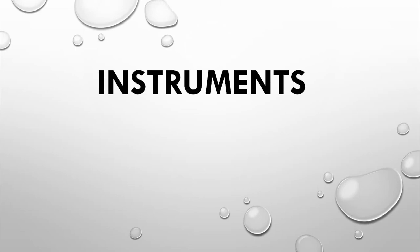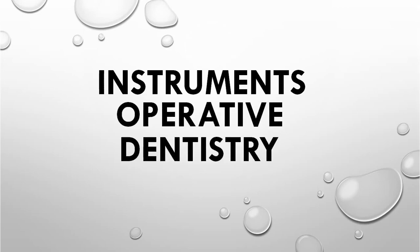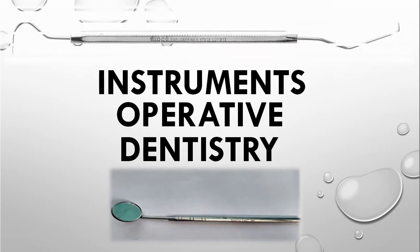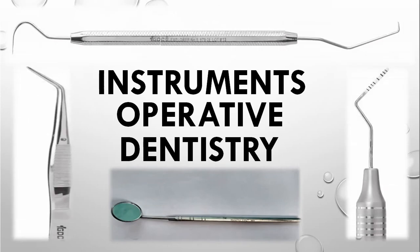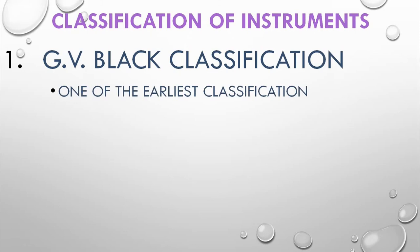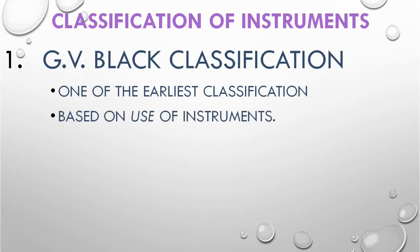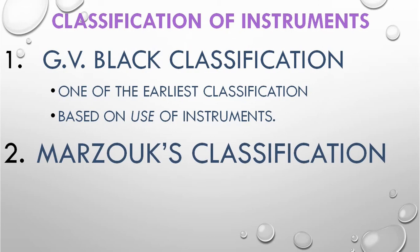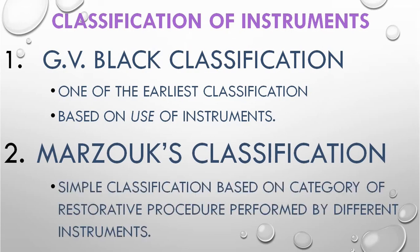Hi, it's P Square. Let's learn about instruments used in operative dentistry. There are two classifications. The first is GV Black classification, one of the earliest classifications, based upon the use of instruments. The other is Mazook's classification, a simpler classification based upon the category of restorative procedure performed by different instruments.